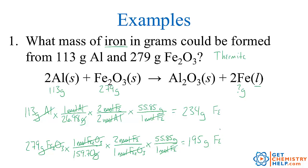So how much iron do we actually make? Do we make 234 grams, 195 grams, or some combination? We always pick whichever is the least amount. So we would make 195 grams of iron. The iron three oxide was the one that limited us to only 195 grams, so iron three oxide is the limiting reactant. That means aluminum is the excess reactant — there was enough aluminum to keep going and make 234 grams of iron. But the iron three oxide ran out and limited us to only 195 grams.